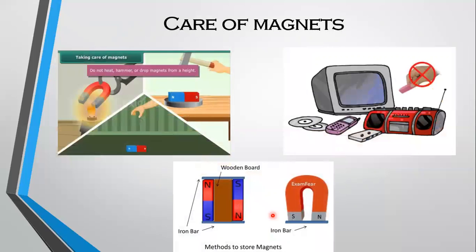So great care must be taken when we are using magnets or while storing them to prevent them from losing their magnetic properties. Magnets should not be heated and rough handling of magnets should be avoided as they will lose their magnetic property. Magnets should be kept away from mobile phones, televisions and computers.